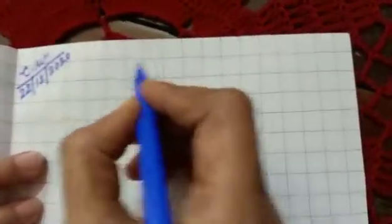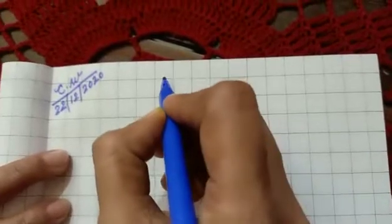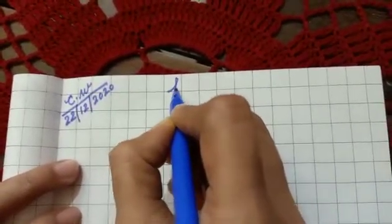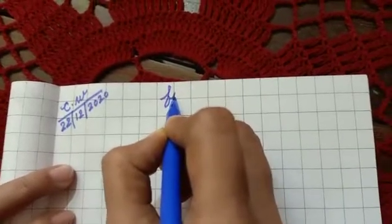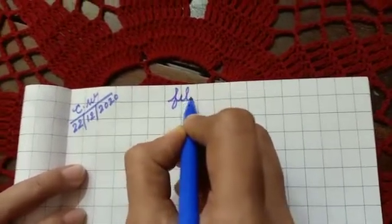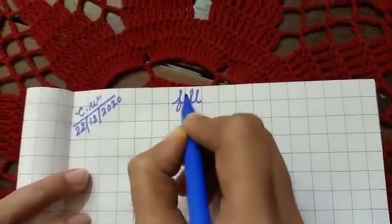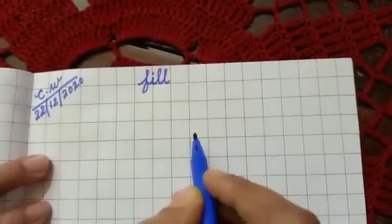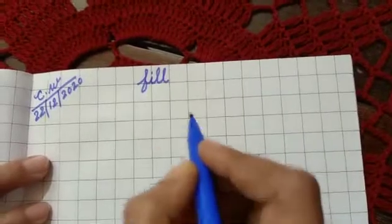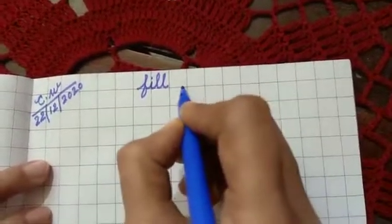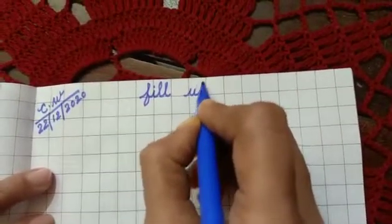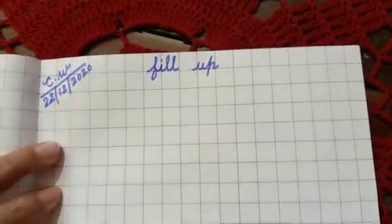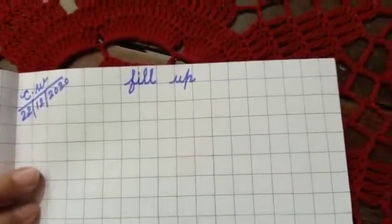Okay, now here you will write fill up. First you write fill, F I double L. Now here you will write up, U P. Fill up. Written.